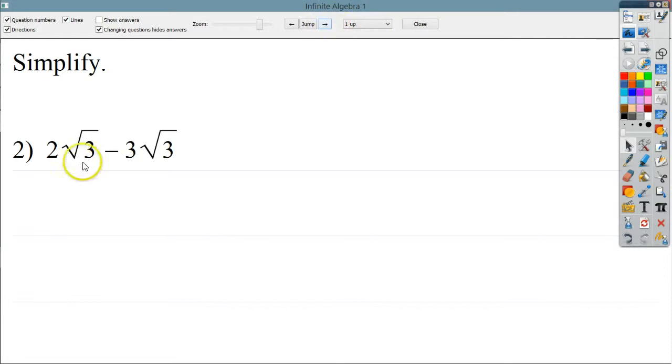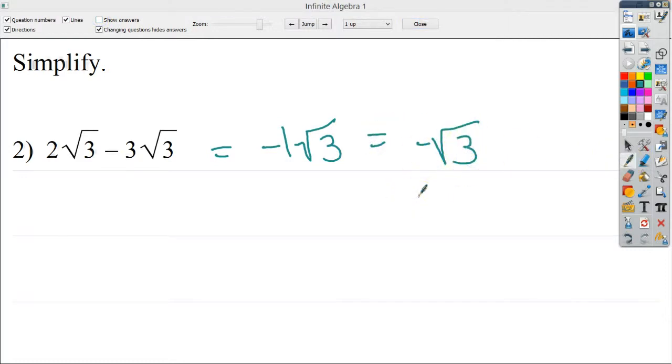The next one, 2 minus 3, well, the indexes are the same because they're both square roots. And the radicands are the same. So 2 minus 3 is negative 1 square root of 3. Occasionally, I get people that get sort of weirded out by the idea of, well, there's a negative there. Am I allowed to do this? Because I know that you're not allowed to have square root of negative something. This is totally fine. This is outside the square root symbol. It doesn't matter. As long as it's not negative underneath.